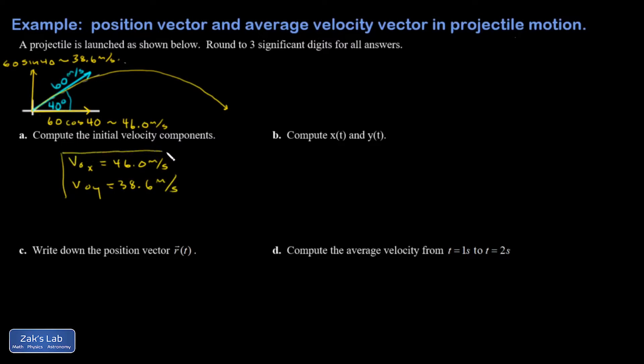So those are answers for that: v naught x is 46.0 and v naught y is 38.6. Part a is done and of course that's just a really typical calculation that you would do at the beginning of basically any projectile motion problem.